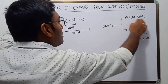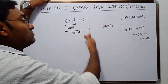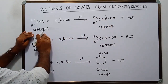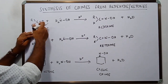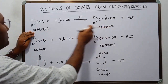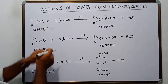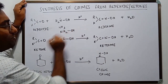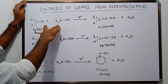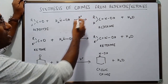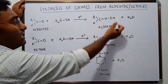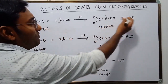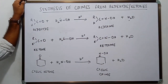To prepare an aldoxyme of a desired number of carbon atoms, we take an aldehyde of the same number of carbon atoms and react it with hydroxylamine in the presence of an acid. These two add up with each other, leading to an addition product with the elimination of a simple molecule of water. This makes it a condensation reaction.